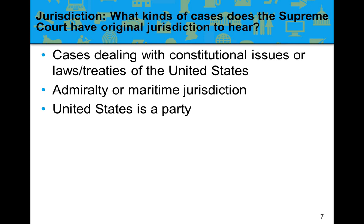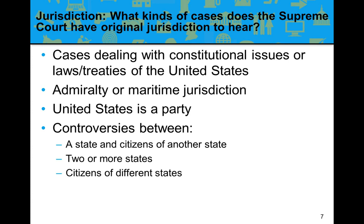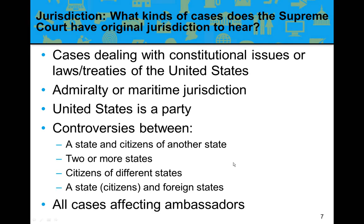If the United States is a party to a case — suing or being sued — that is heard originally at the Supreme Court. Controversies between a state and citizens of another state, between two or more states, between citizens of different states, or involving a state and a foreign entity are heard originally at the Supreme Court to avoid conflicts of interest in state courts. Additionally, if an ambassador from another country is accused of a crime and brought to trial, the Supreme Court would hear that case first.